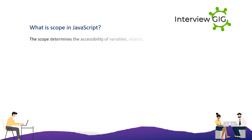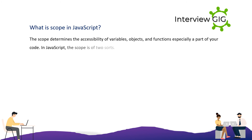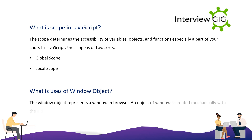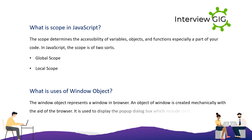What is scope in JavaScript? The scope determines the accessibility of variables, objects, and functions in a particular part of your code. In JavaScript, scope is of two types: global scope and local scope. What are the uses of the window object? The window object represents a window in the browser and is created automatically by the browser. It is used to display pop-up dialog boxes such as alert, confirm, and prompt dialogs.